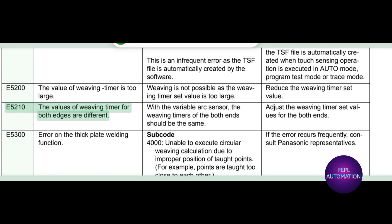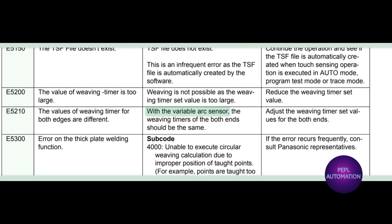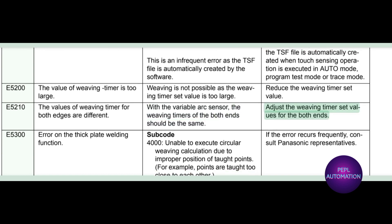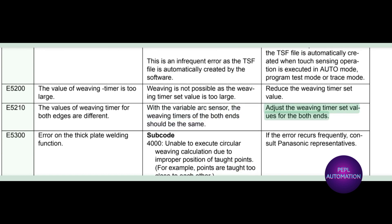E5210: the values of weaving timer for both edges are different. With the variable arc sensor, the weaving timers of both ends should be the same. Adjust the weaving timer set values for both ends.